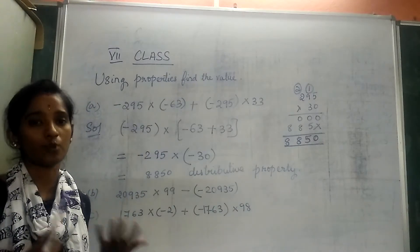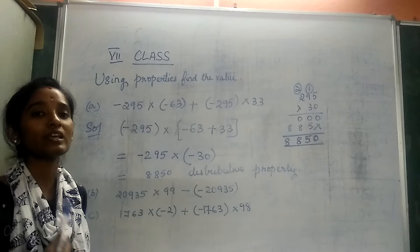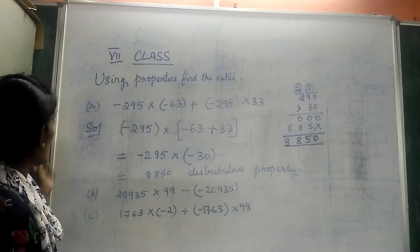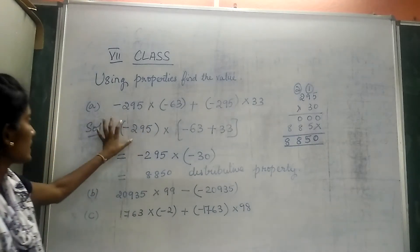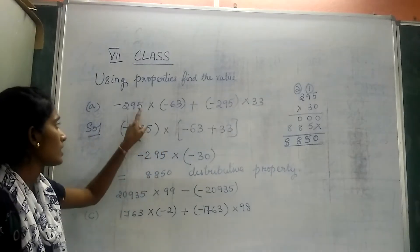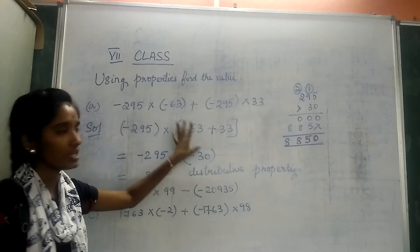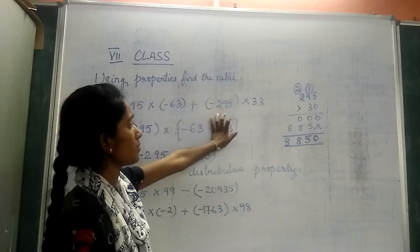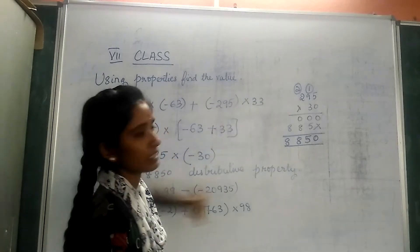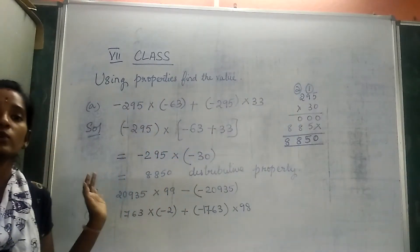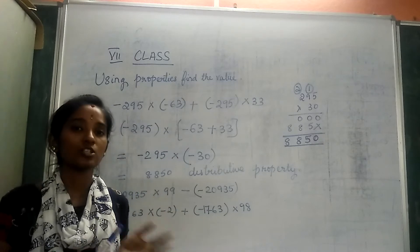So let us see what type of property it is and how do we identify them. See the first question. We are given -295 × (-63) + (-295) × 33. First we have to identify which is common.